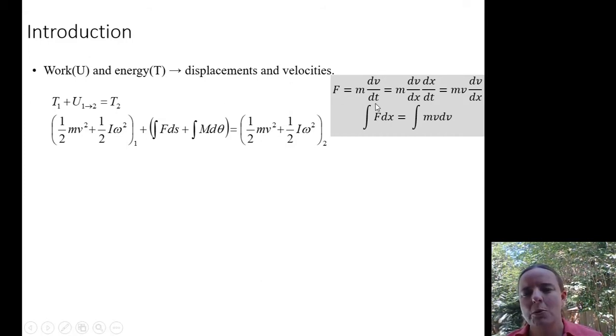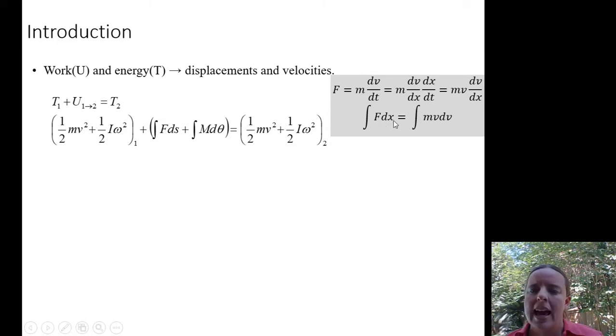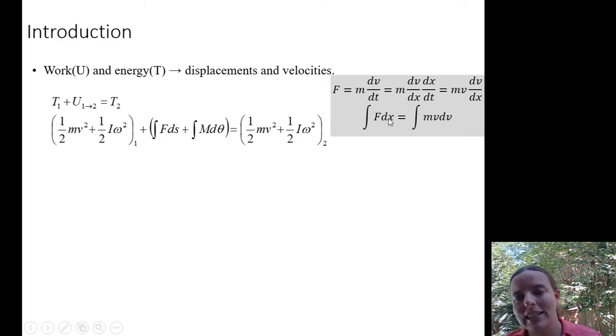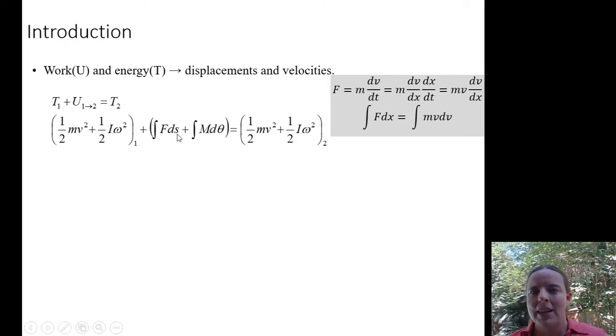For energy, we're going to worry about displacements rather than time. To get rid of time, we use that chain rule. We throw dx over dx into here. dx over dt turns into velocity. We're left with F equals mv dv dx instead of F equals ma. Take the dx over, and F dx, I shouldn't say dx or dy or dz, it's just some kind of displacement S, could be an arc length or something.